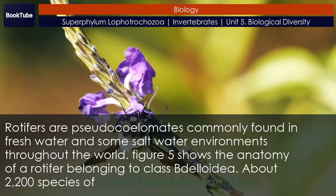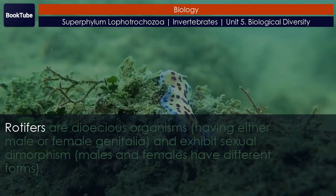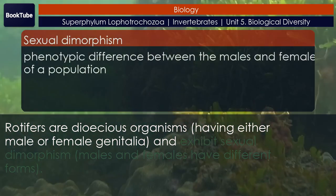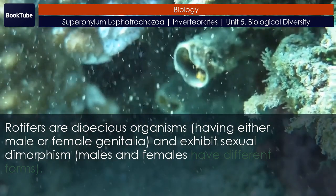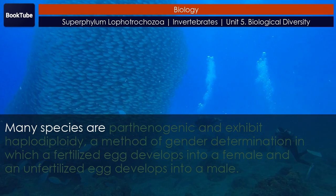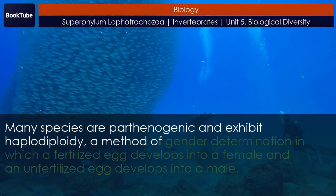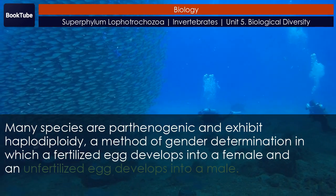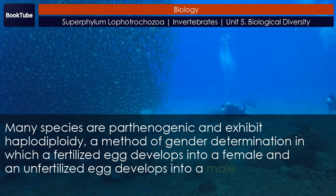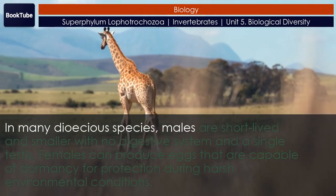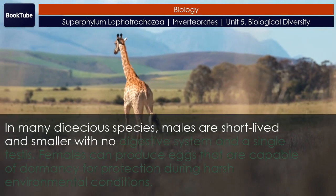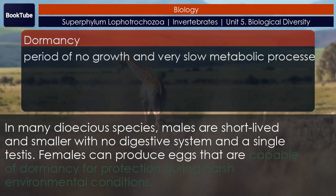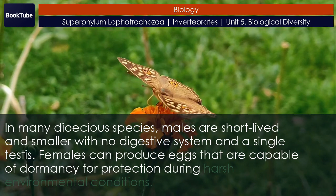Rotifers are pseudocoelomates commonly found in fresh water and some salt water environments throughout the world. About 2,200 species of rotifers have been identified. Rotifers are dioecious organisms, having either male or female genitalia, and exhibit sexual dimorphism. Many species are parthenogenic and exhibit haplodiploidy — a method of gender determination in which a fertilized egg develops into a female and an unfertilized egg develops into a male. In many dioecious species, males are short-lived and smaller with no digestive system and a single testis. Females can produce eggs capable of dormancy for protection during harsh environmental conditions.